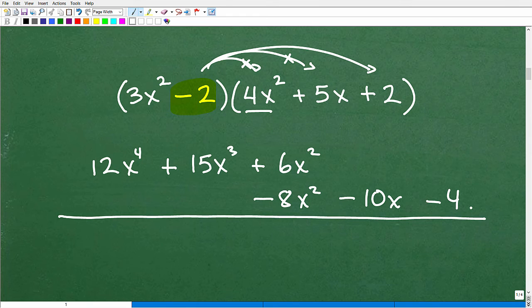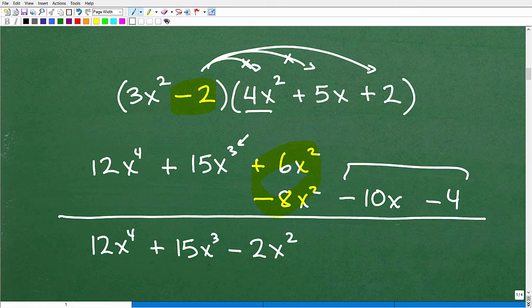So now I can just go ahead and combine like terms. And let's write this in standard form. In other words, highest to lowest power. So that would be 12x to the 4th, because there's no other x to the 4th term. So I can't combine that with anything. So our next highest degree is our x to the 3rd power. So that would be 15x cubed. And here I could combine like terms, because I got 2x squared terms. So this would be negative 2x squared. And then we'll just write the rest of this down here. Minus 10x minus 4. And that is it. This is the product of these two polynomials.